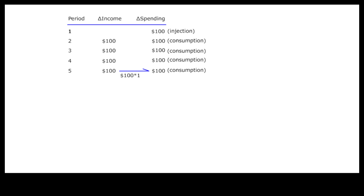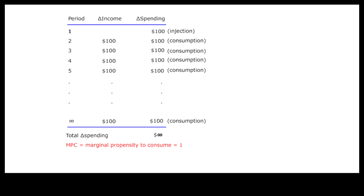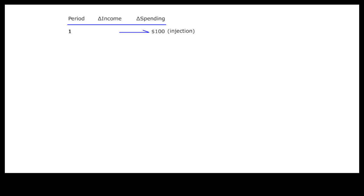This process can go on forever, adding an infinite amount of additional income and expenditure. This is so only because 100% of additional income in each round is spent on consumption. This percentage is called the marginal propensity to consume, or MPC for short.